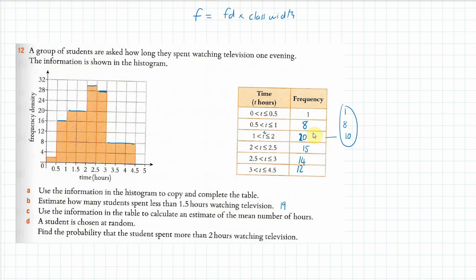For part D, we're choosing a student at random and finding the probability that a student spent more than 2 hours watching television. The students spending more than 2 hours total 15 + 14 + 12 = 41. The total number of students is 70, so the probability is 41 out of 70. And that is how you do that.